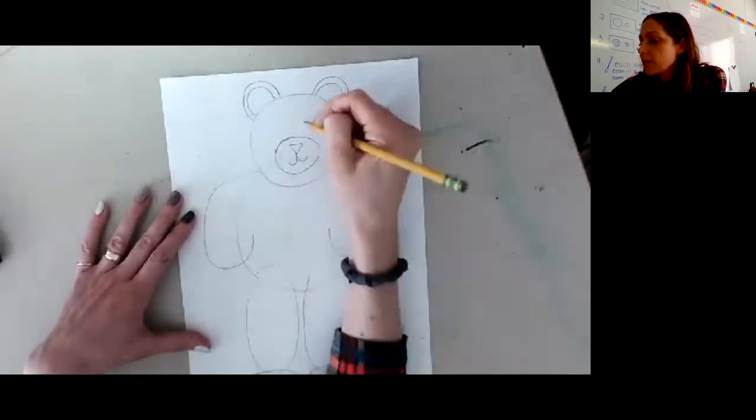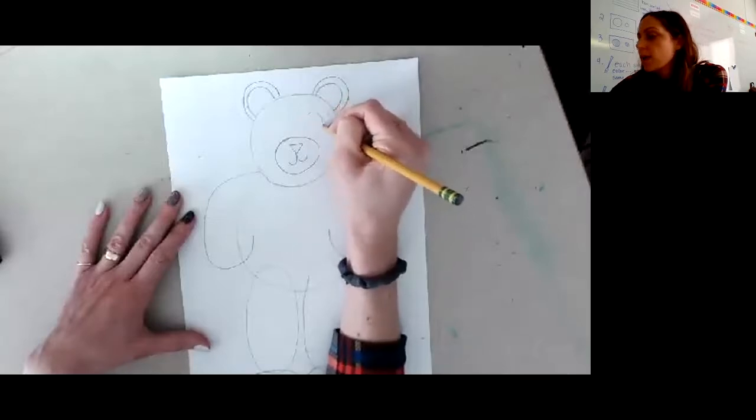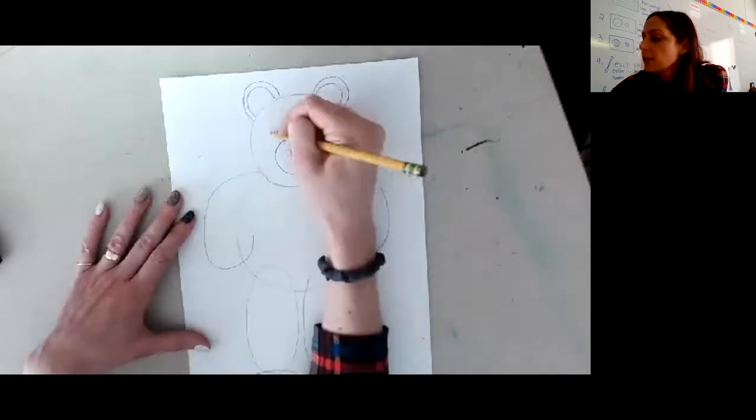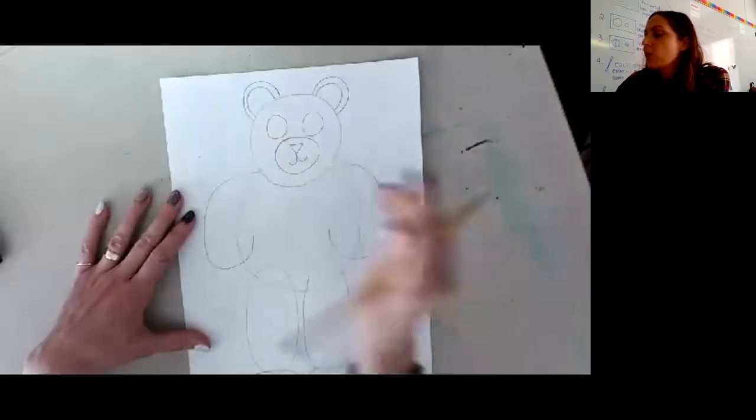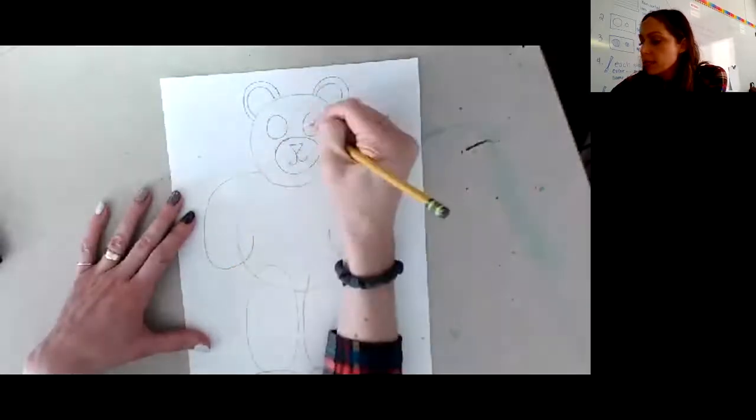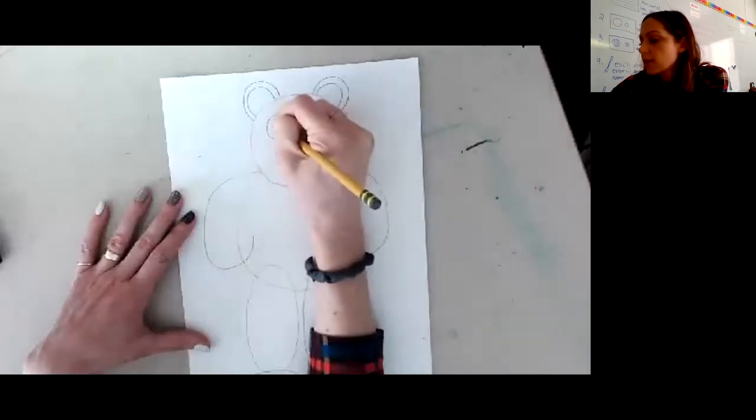For my bear's eyes, more circles, one on the side and one on the side. And I want them a good size because I'm going to actually make two more circles on the side.